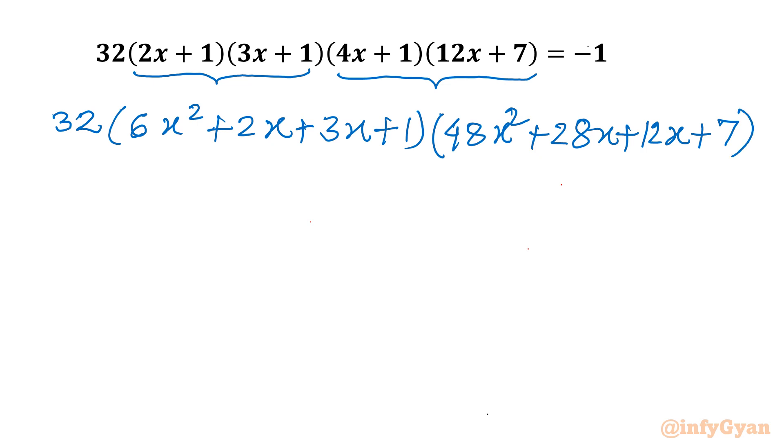And if I will consider plus 1, then it will be equal to 0. Now the left hand side, if you will write again, 6x squared plus 5x plus 1. In the second bracket it is 48x squared plus 40x plus 7, and then plus 1 equal to 0.